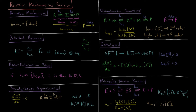Catalysis occurs whenever we have some chemical species which is not consumed during a reaction but participates and lowers the activation barrier for that reaction. If our activation energy delta E goes down even a little bit, that means our rate constant is going to go up by a lot, and thus our reaction rate is going to go up by a lot.